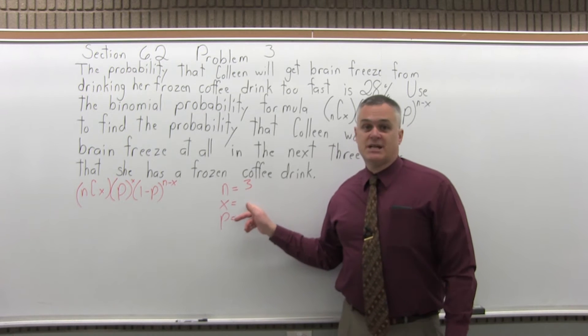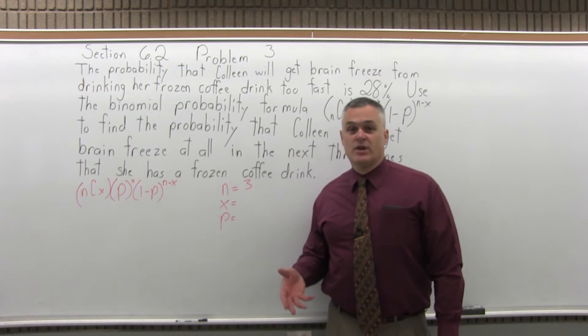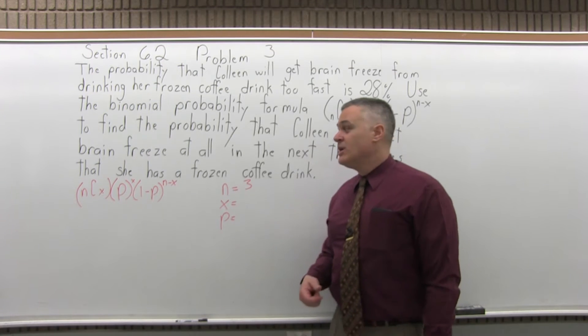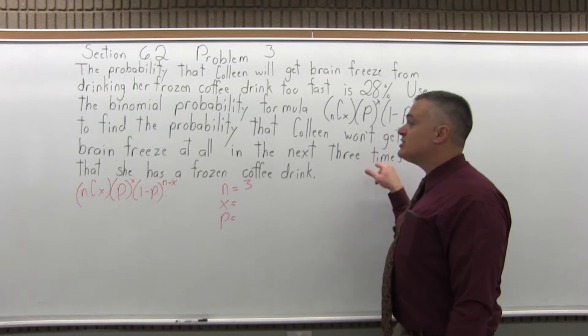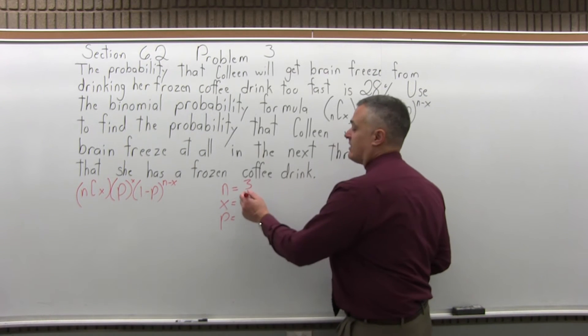X is the number of successes. So how many times are we trying to find the probability that Colleen will get brain freeze? Well it'd be zero, because it says that she won't get brain freeze at all, so x is zero.